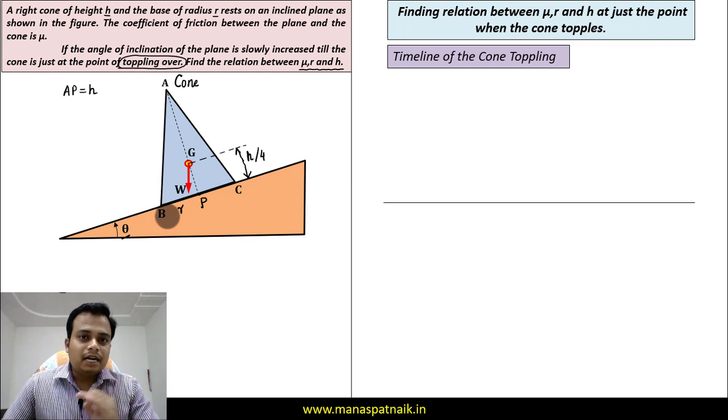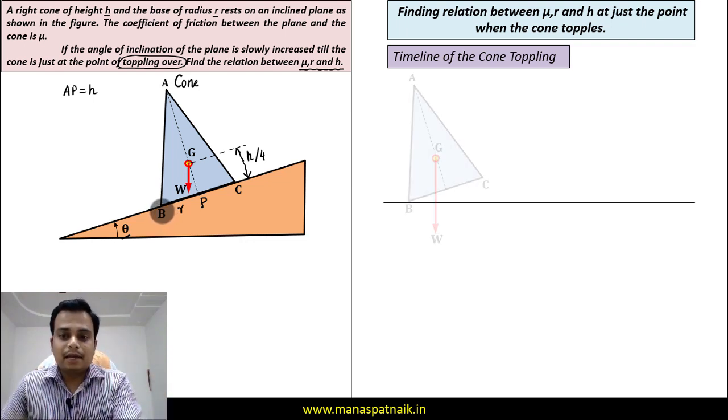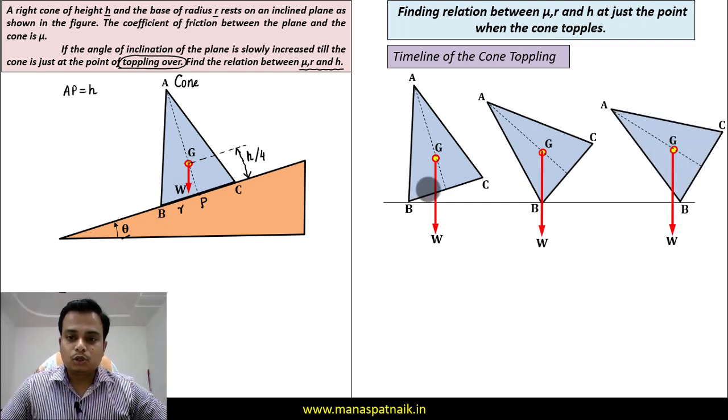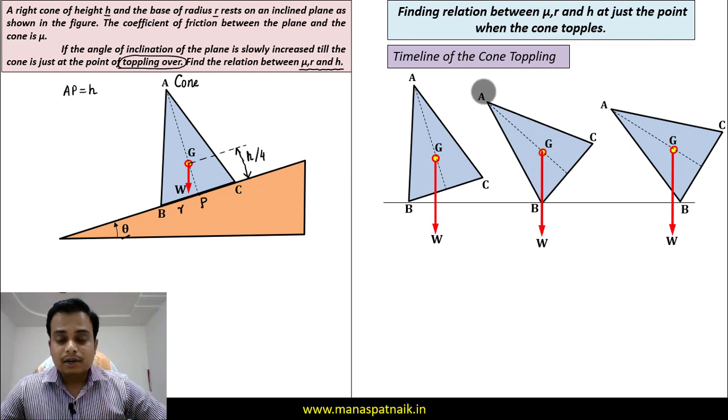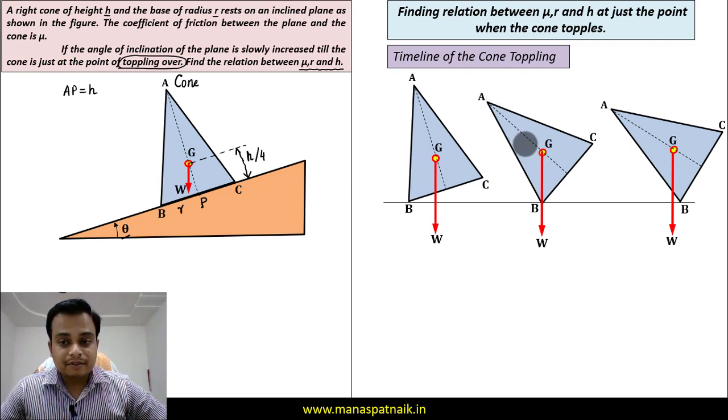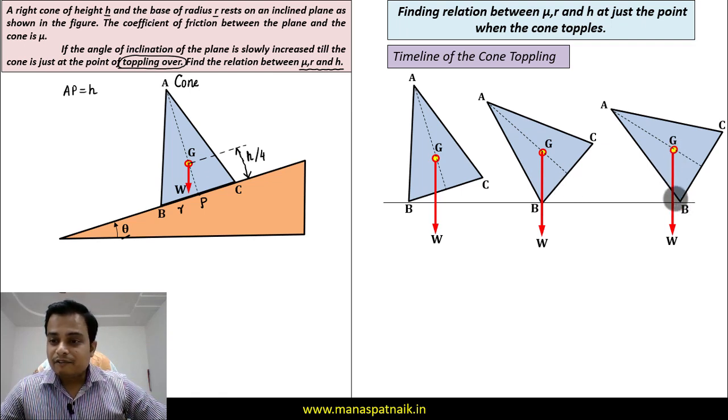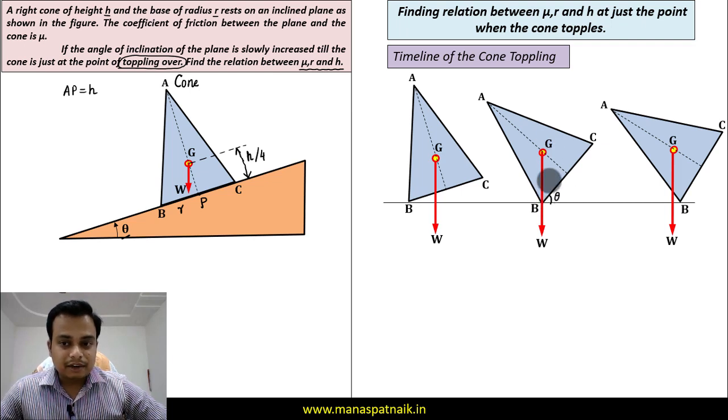Here is the timeline of the cone. You can clearly see, no toppling. This is a limiting case. The cone will stay in this position forever, no problem. But here you can clearly see that this line of action is towards the left of point B, and here the cone topples. So it is for this condition, this state, we need to find the relationship. Let's say this angle is represented by theta.